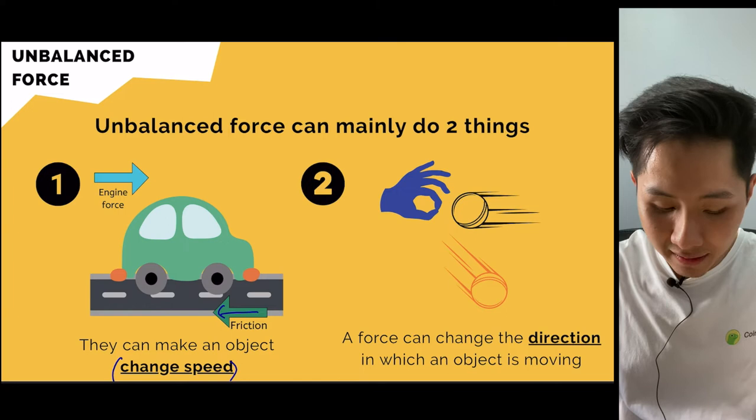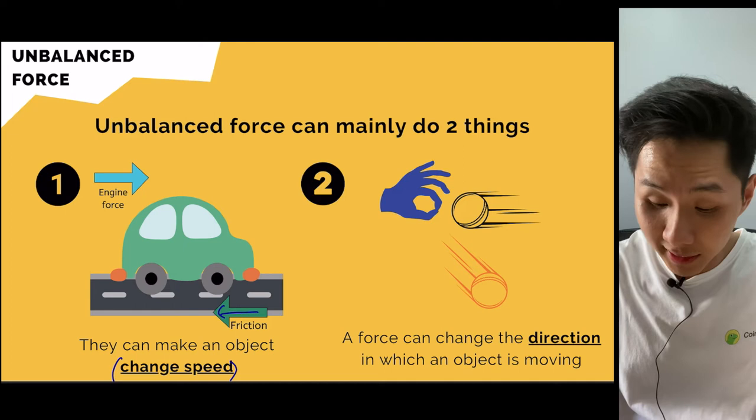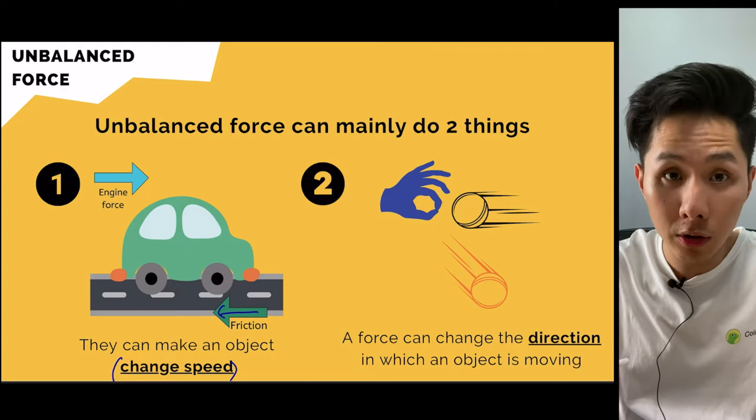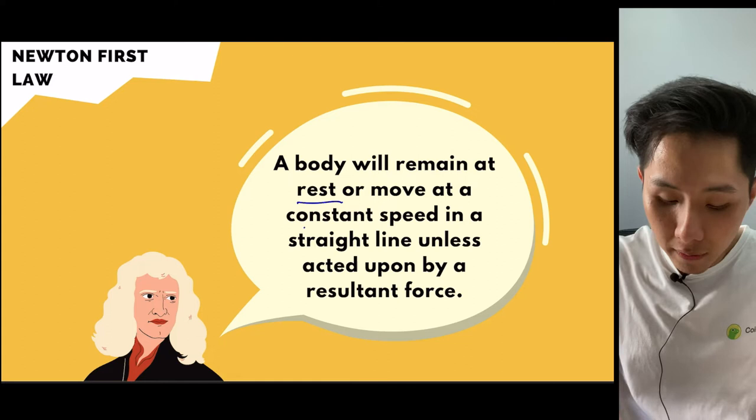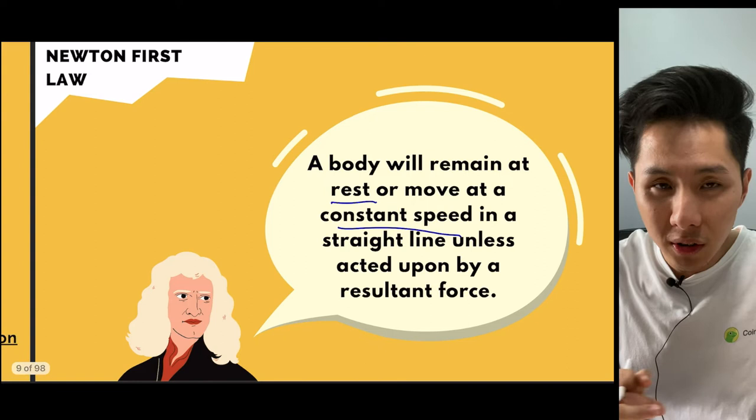Besides changing speed, an unbalanced force can also change direction. For example, an unbalanced force will change the direction of a ball. Here's Newton's first law: a body will remain at rest or move at constant speed in a straight line unless acted upon by a resultant force, which is related to what we just discussed.